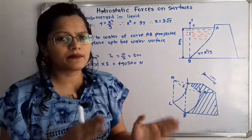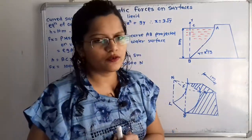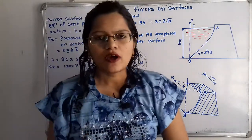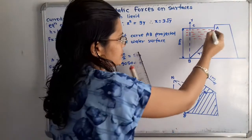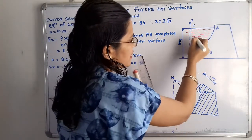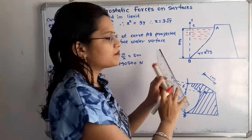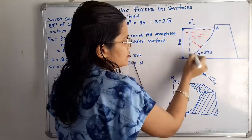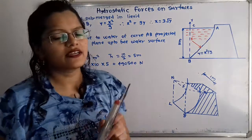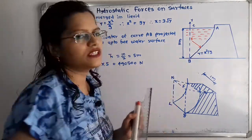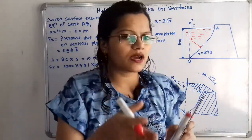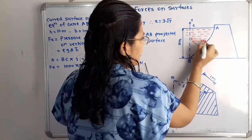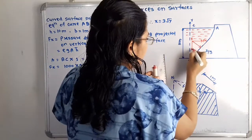We have to find the magnitude and direction of the resultant force — the force applied by the water on curve AB. On the outside of this curve there is water, and the pressure force is being applied. Since this is a curved surface, the force is in an inclined direction. We resolve this force into two components: the horizontal component Fx and the vertical component Fy.